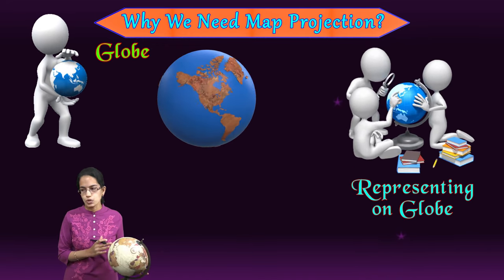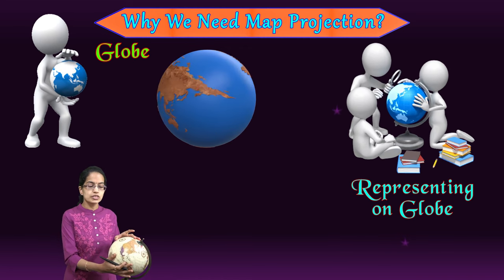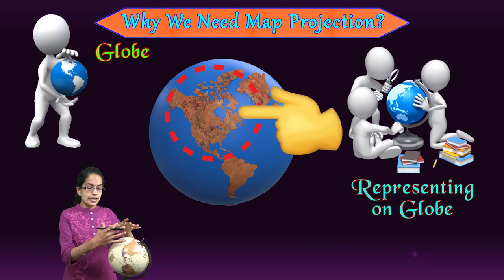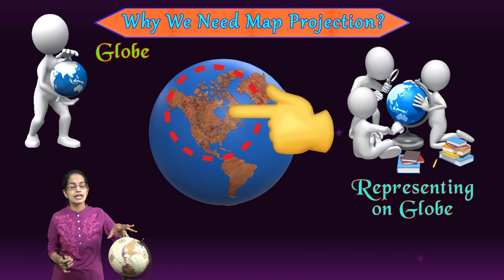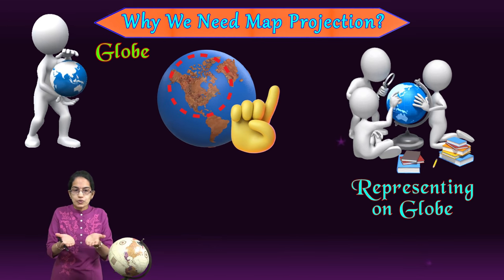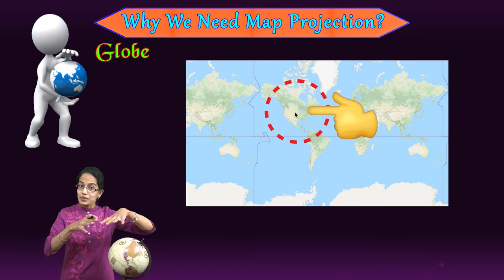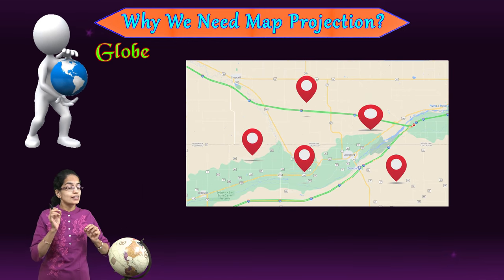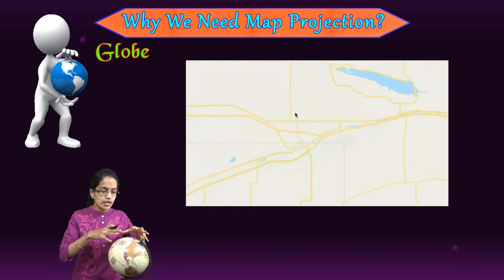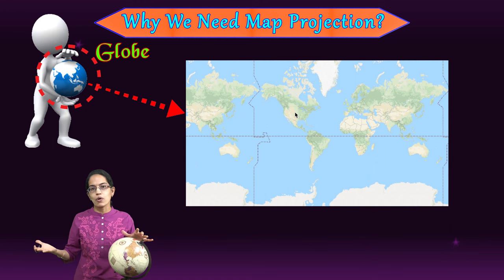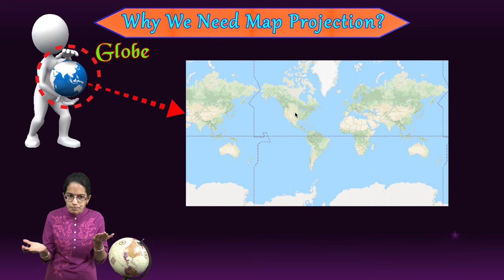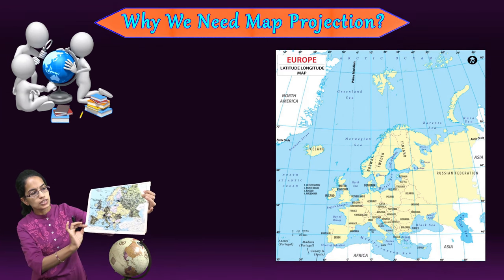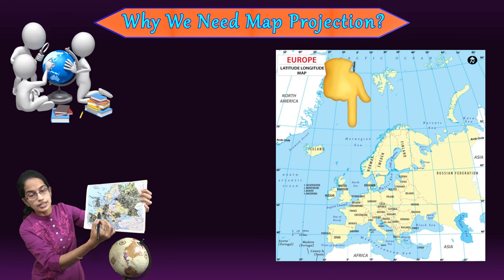Representation on the globe also has limits. When focusing on North America, that section is very small on the globe. If I want to zoom in and show specific regions of North America, it is not possible on the globe. On a sheet of paper, you can take a specific area, enhance and magnify it, and show finer details. Here we have a sample from an Atlas showing the region of Europe, and the lines running through it are the projections.